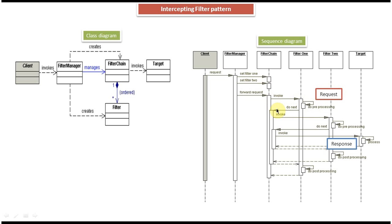Once filter one finishes preprocessing, it calls do-next of filter chain, and filter chain then invokes filter two. Filter two does the preprocessing of the request, and once it finishes it calls do-next of filter chain. At this point filter chain has executed all the filters — filter one and filter two. Once it finishes execution of all the filters, it invokes the target object. The target object gets the request, processes it, formulates the response, and sends it back to the client.